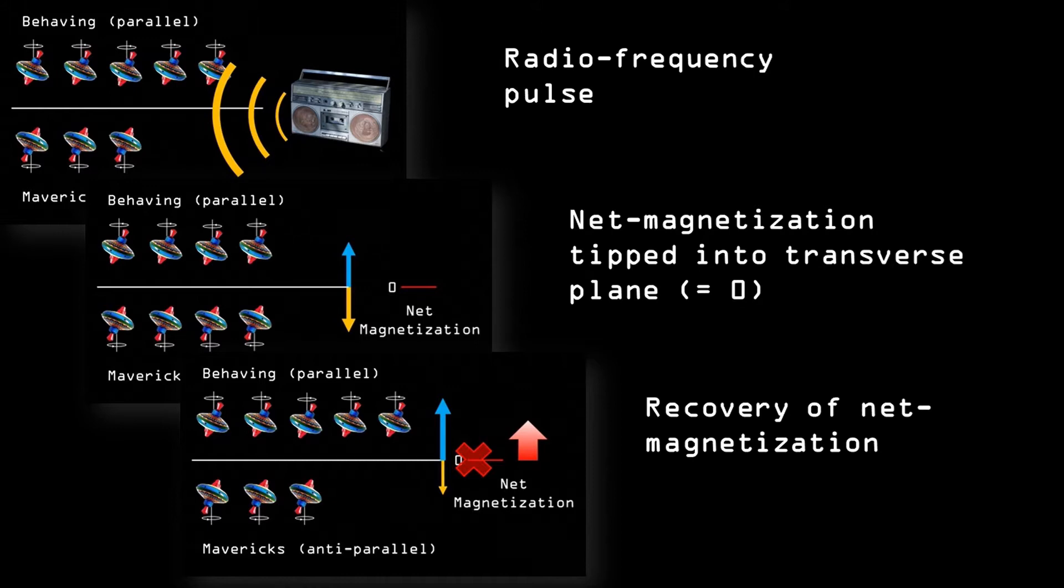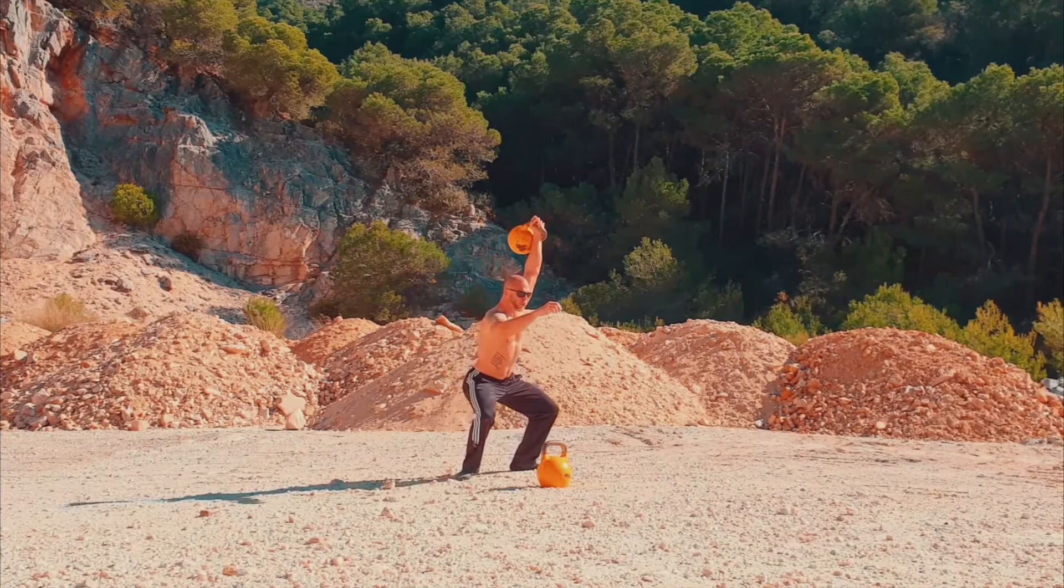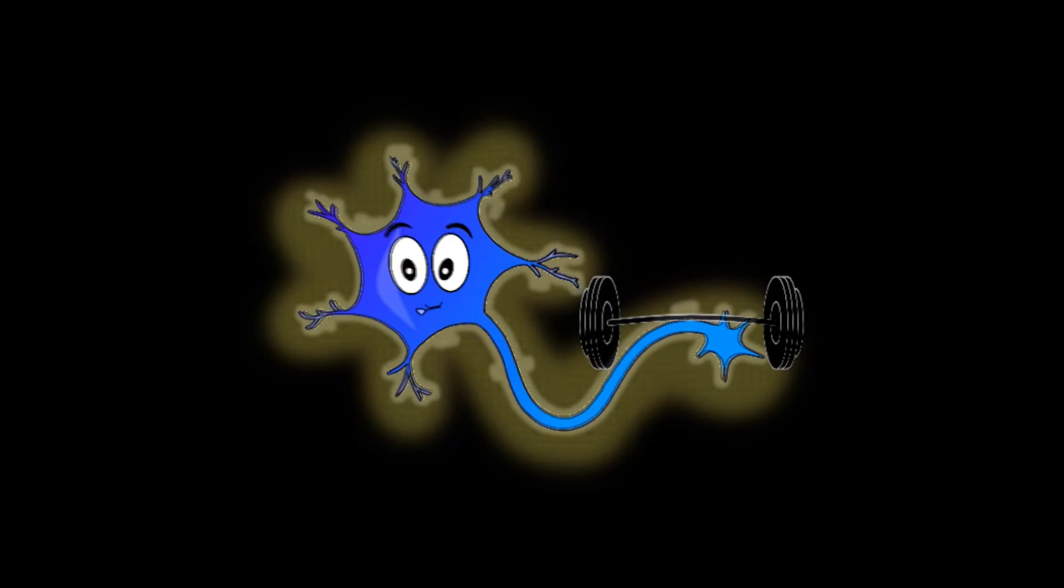Ok cool, but how does this help us to see if neurons within a region are active? Well, if you have ever done a large amount of exercise, you will recognize that you often feel hungry afterwards. Our neurons are just like us. If they were active, they need energy, and they take energy in the form of glucose and oxygen.